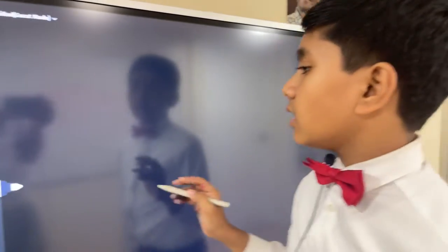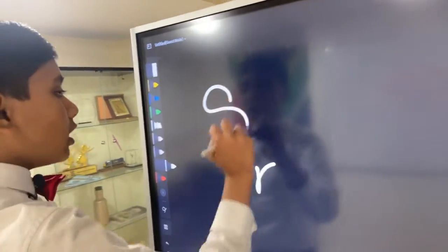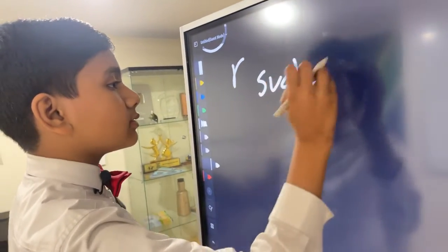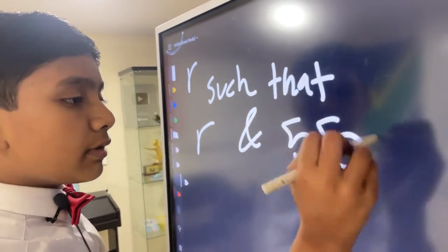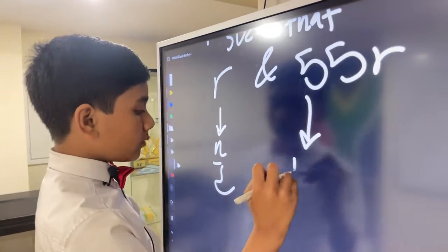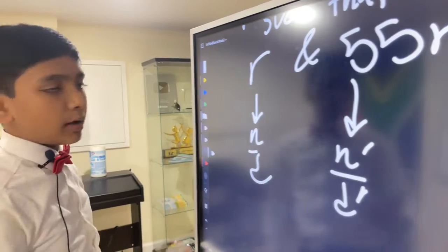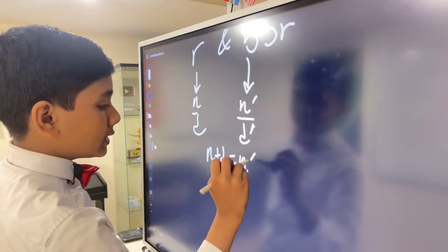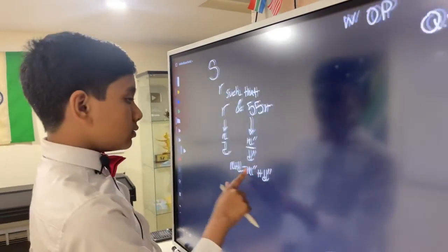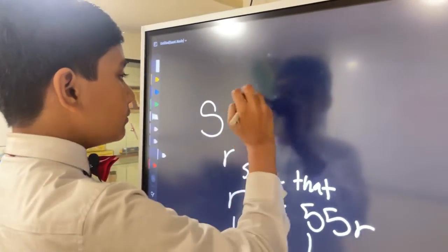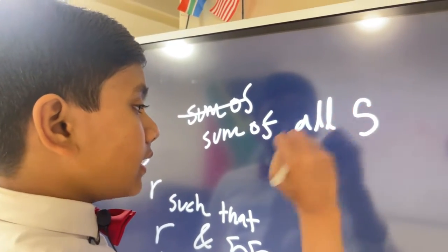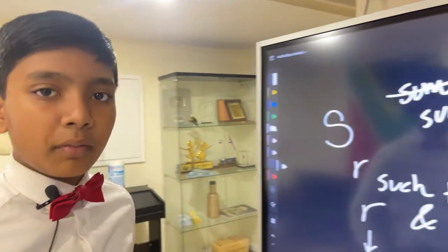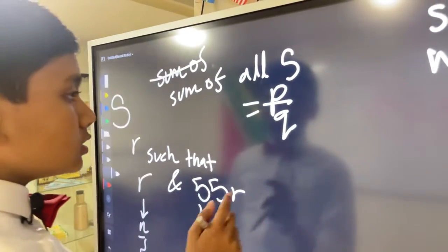So AIME problem 5 says, take a rational number R, any rational number R. So there is a set S of all possible values of R, such that R and 55R are, when both expressed in simplest form, so N over D and N prime over D prime, where N and D and N prime and D prime are relatively prime, then they sum up to the same number when expressed in simplest form. So what is the sum of all elements of S can be expressed as P over Q in simplest form, where P and Q are relatively prime integers. So what is P plus Q?